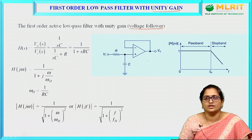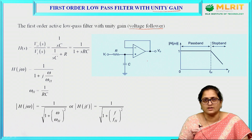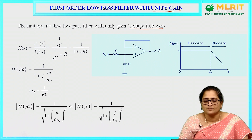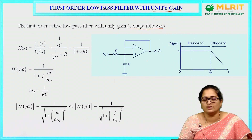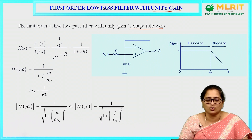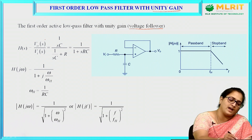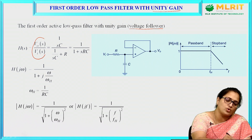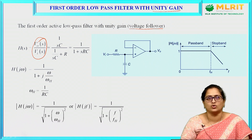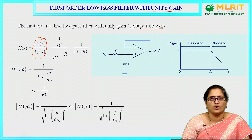For any filter we need to find out the frequency response. For this low pass filter, if you want to find out the frequency response, you need to find out the transfer function first. To find the transfer function, you need to get a relation between output voltage and input voltage. The transfer function is defined as the ratio of output voltage to input voltage, that is V naught of s divided by Vi of s.